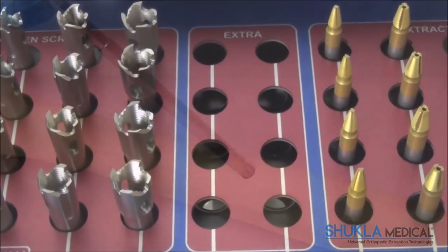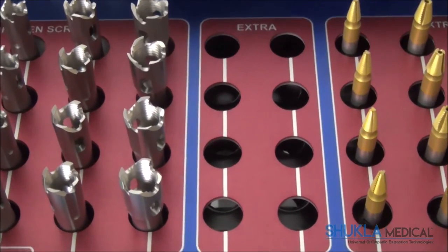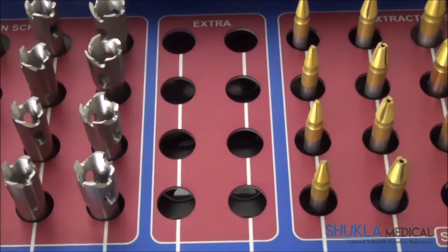There are two empty rows marked extra to the right of the broken screw extractors for additional extractors, if needed.